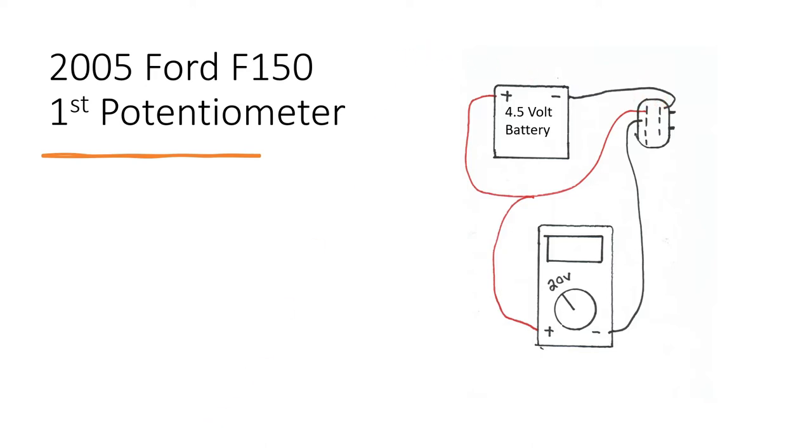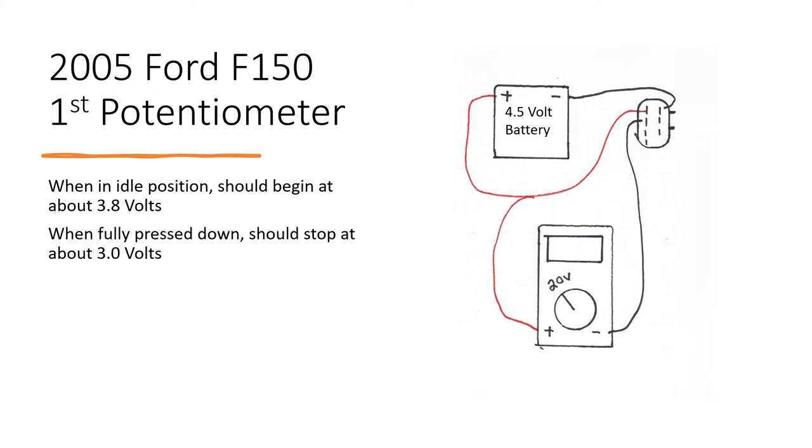Once you do that, the multimeter should read about 3.8 volts when it's set at the idle position. Then, as you press it down, it should end around 3.0 volts.